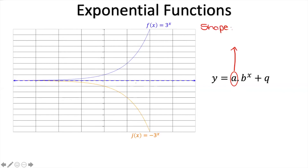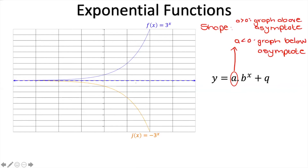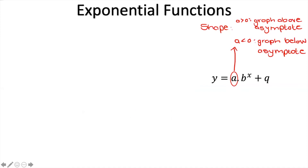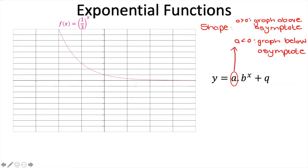So a tells us about the shape: when a is greater than 0, the graph is above the asymptote; when a is less than 0, it's below the asymptote. Let's verify this with y equals one third to the power of x — making a equal to negative 1 gives us negative 1 over 3 to the power of x, which is negative 1 times 1 over 3 to the power of x. It flips it over again. So if a is greater than 0, the graph is above the asymptote; if a is less than 0, it's below.